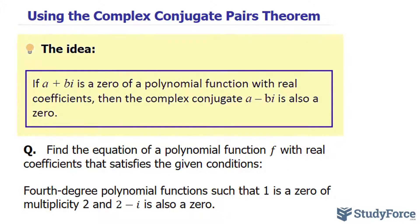The idea behind this theorem is that if you have a complex root, where it's a plus bi, for a polynomial function with real coefficients, then the complex conjugate a minus bi is also zero.